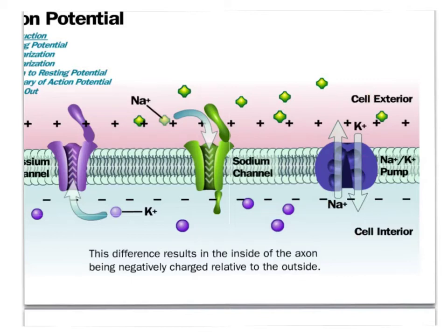It pumps out quite a lot of sodium so it can create this positive charge on the outside of the cell. The other two proteins we have: one is a sodium pump, which when activated pumps the sodium in. And another, the potassium pump, which can pump the potassium out.